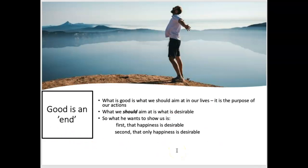So if good is an end, what is good is what we should aim at in our lives — it is the purpose of our actions, and what we should aim at as well. So it's a normative claim. What he wants to show is first that happiness is desirable, and secondly, and more controversially, that only happiness is desirable.